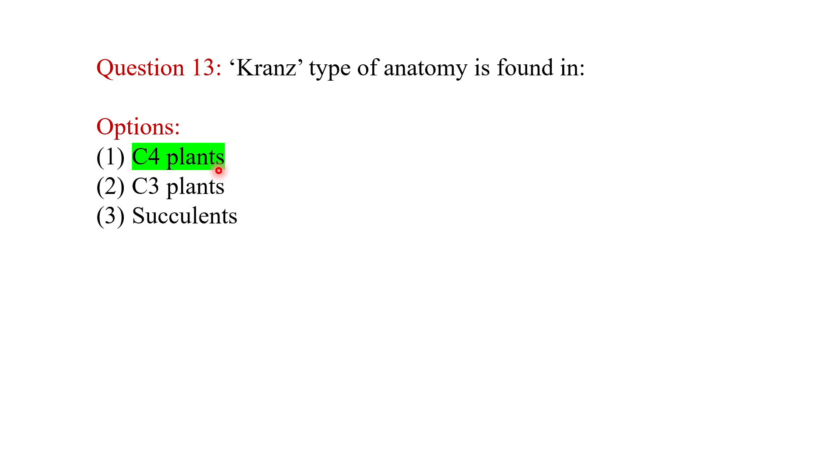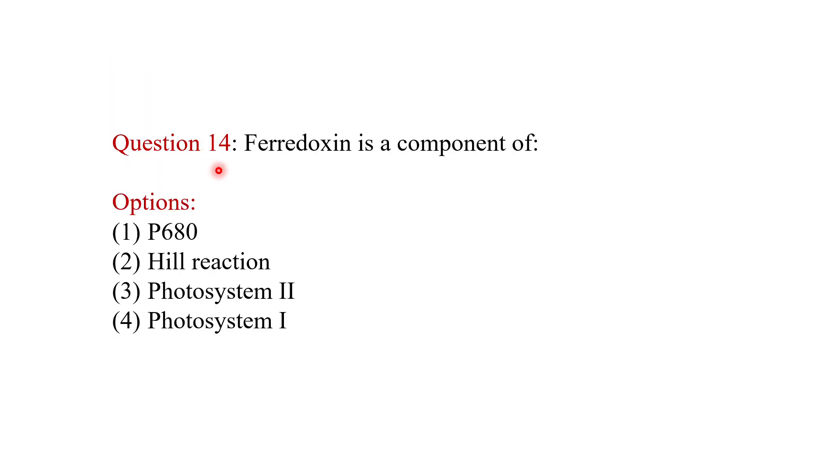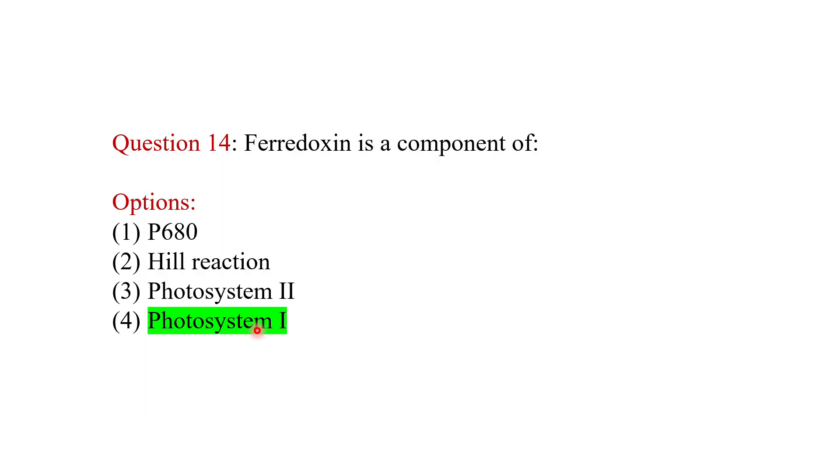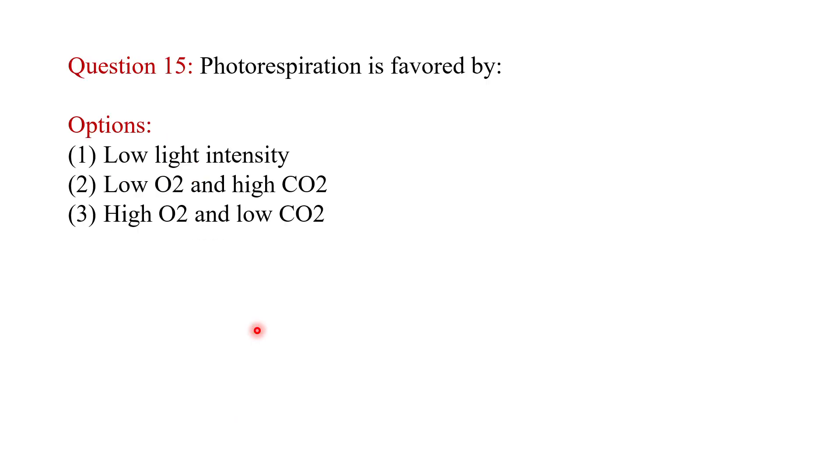Ferredoxin is a component of what? Here we see this is the photosystem 1, and ferredoxin is found in photosystem 1. So the answer is PS1 or photosystem 1. Photorespiration is favored by what? High oxygen and low CO2 content.